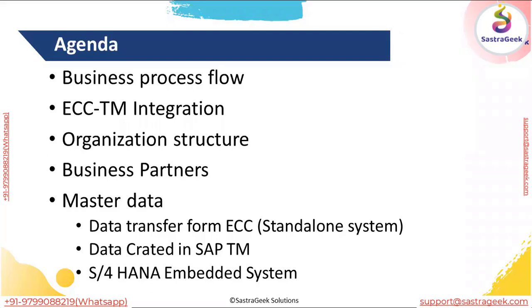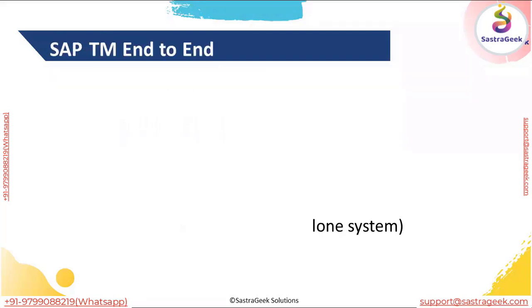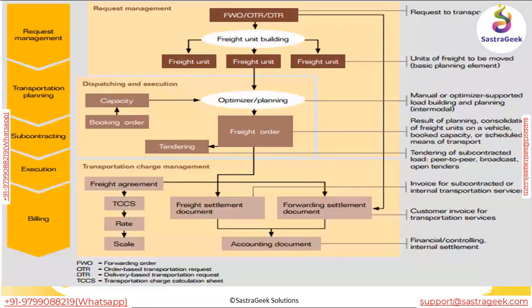Welcome once again for today's discussion. Let's do a quick recap. This is the end-to-end flow of TM — starting at the very top with request management, that is the FWO (forwarding order). Then FWO, DTR, and OTR create a FUBR — a Freight Unit Building Rule.